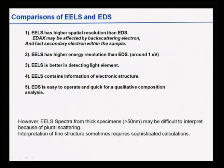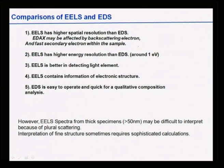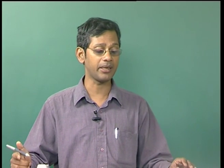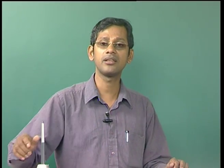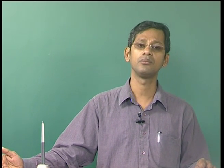In summary, comparing EELS and EDS: EELS has higher spatial resolution than EDX, which may be affected by background scattering. EELS has higher energy resolution than EDX — around 1 electron volt. EELS is better in detecting lighter elements; EDS can detect elements with atomic number less than carbon (Z=6). EELS contains information on electronic structure which EDS doesn't. EDS is easy to operate and quick for qualitative analysis. However, EELS spectra from thick specimens may be difficult to interpret because of plural scattering, and interpretation of fine structures sometimes requires sophisticated software and calculations. With this I conclude this lecture, and the next lecture will start with surface characterization techniques — mostly XPS and Auger spectroscopy.